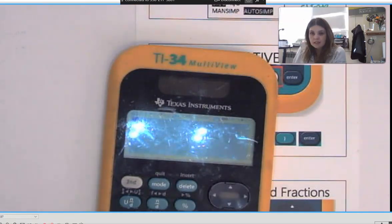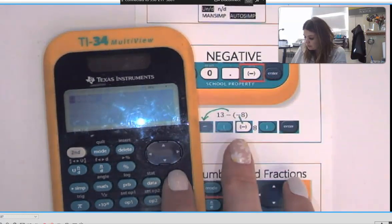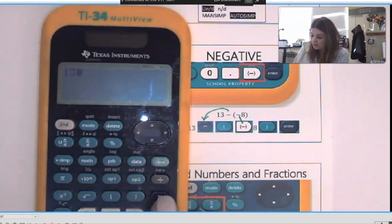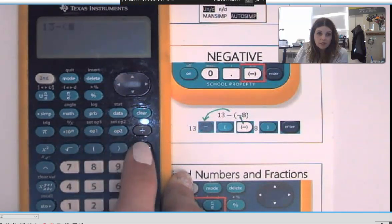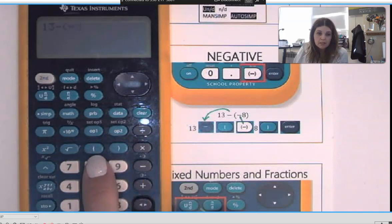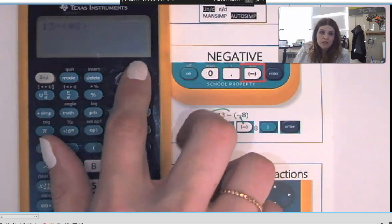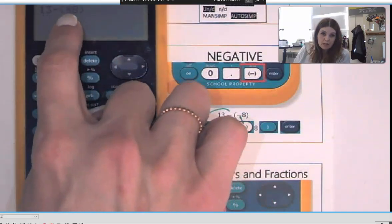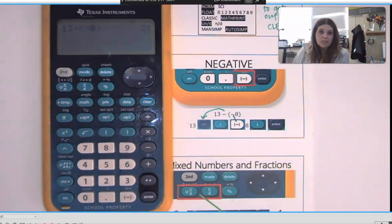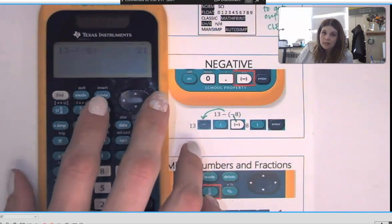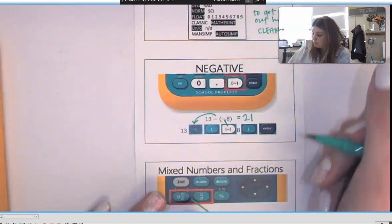So I would do 13, and then I would have to hit my subtract button which is right here. Your parentheses are here, so you would hit parenthesis. If you end up hitting the subtract button again, what it's going to give you is a syntax error. If you get that syntax error it's because you hit subtract here instead of negative. So while it's flashing there I'm going to hit my negative button and hit enter again, and that will actually give me the right answer. So this 13 subtract negative 8 turns into a positive 21.